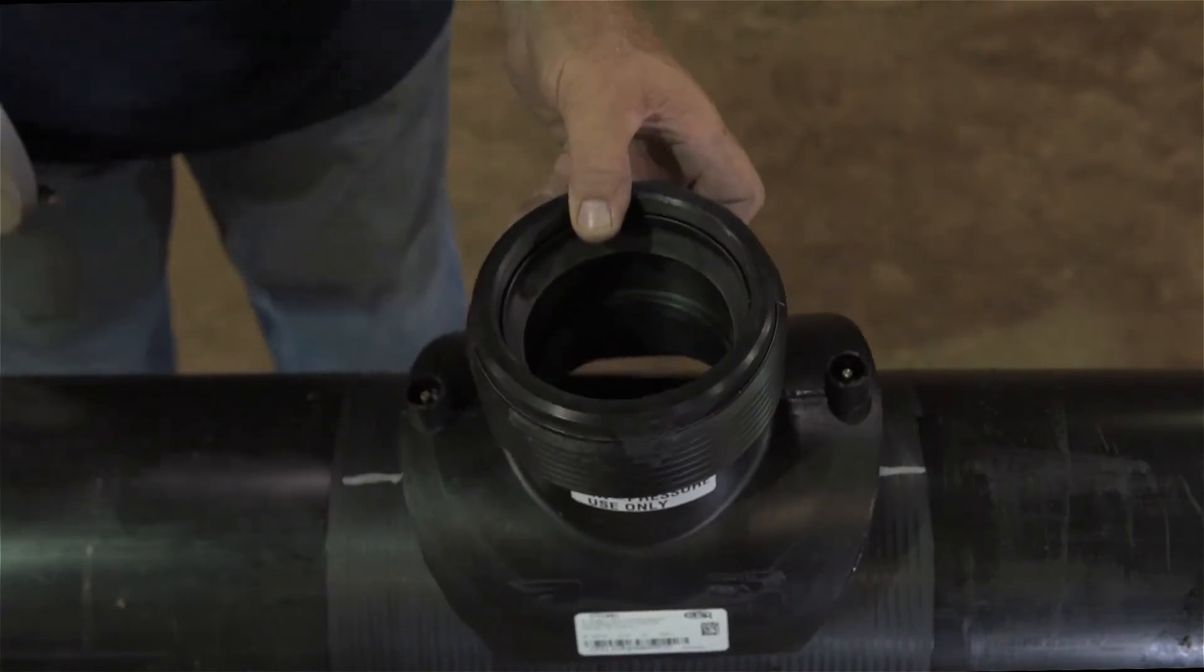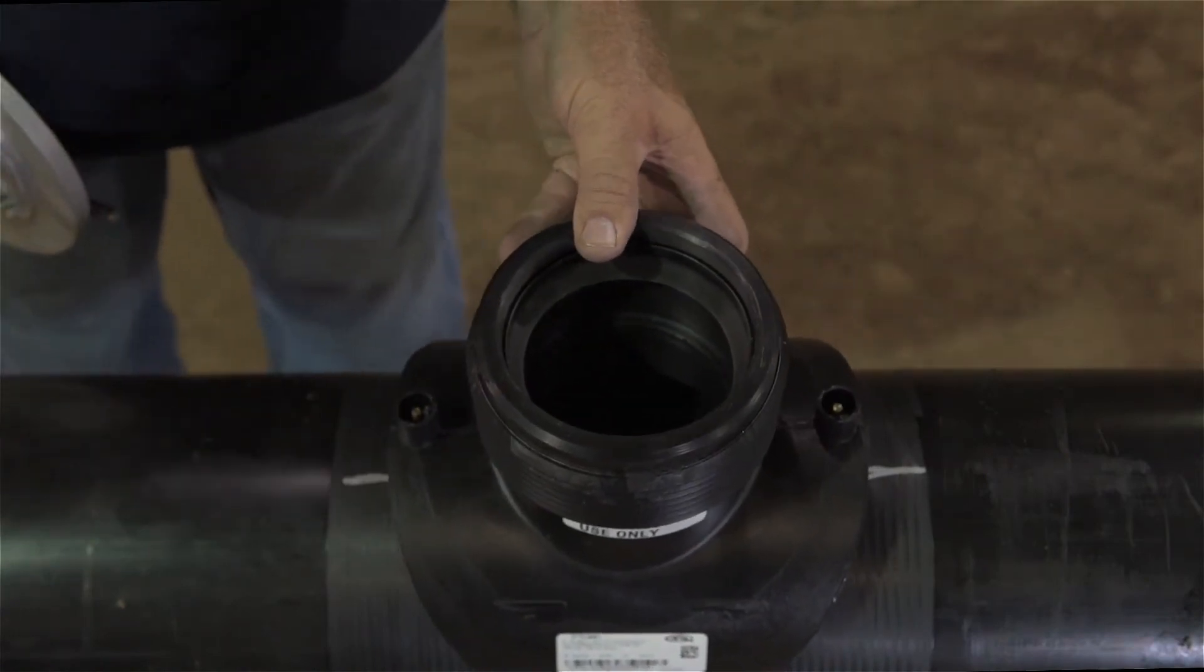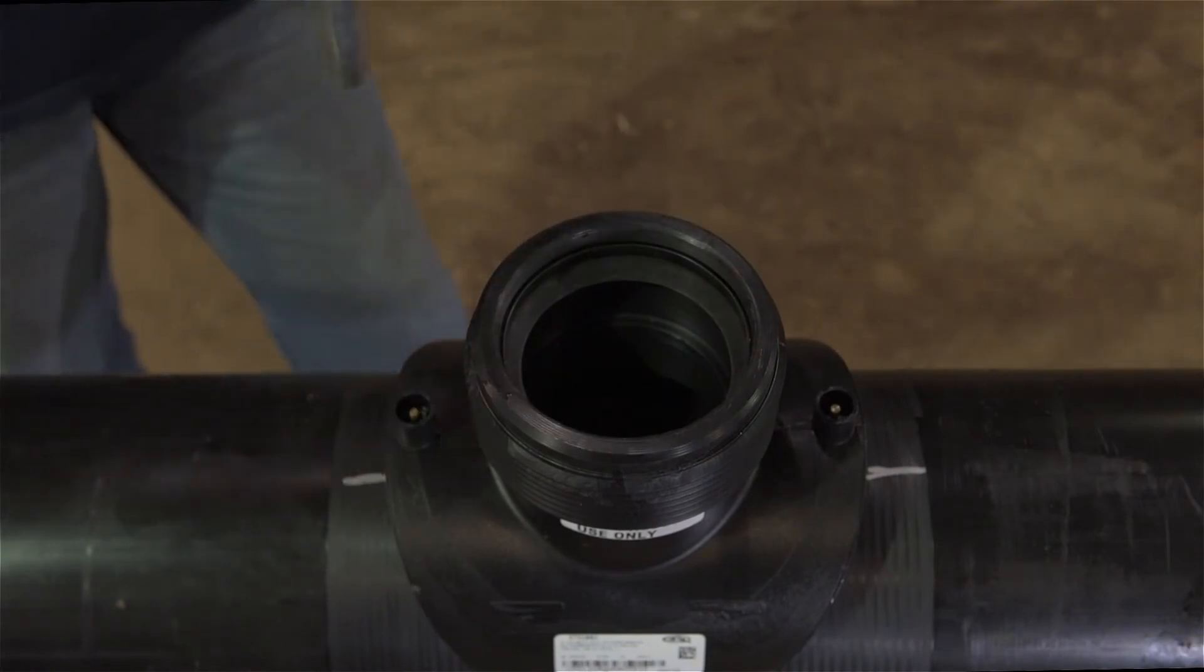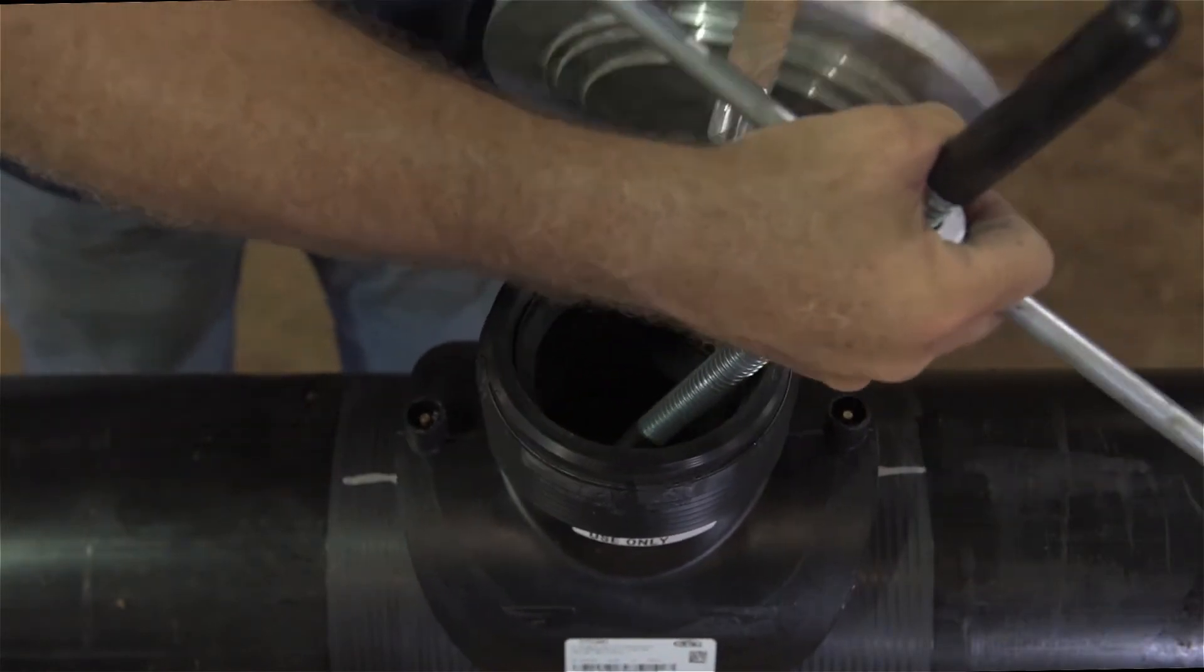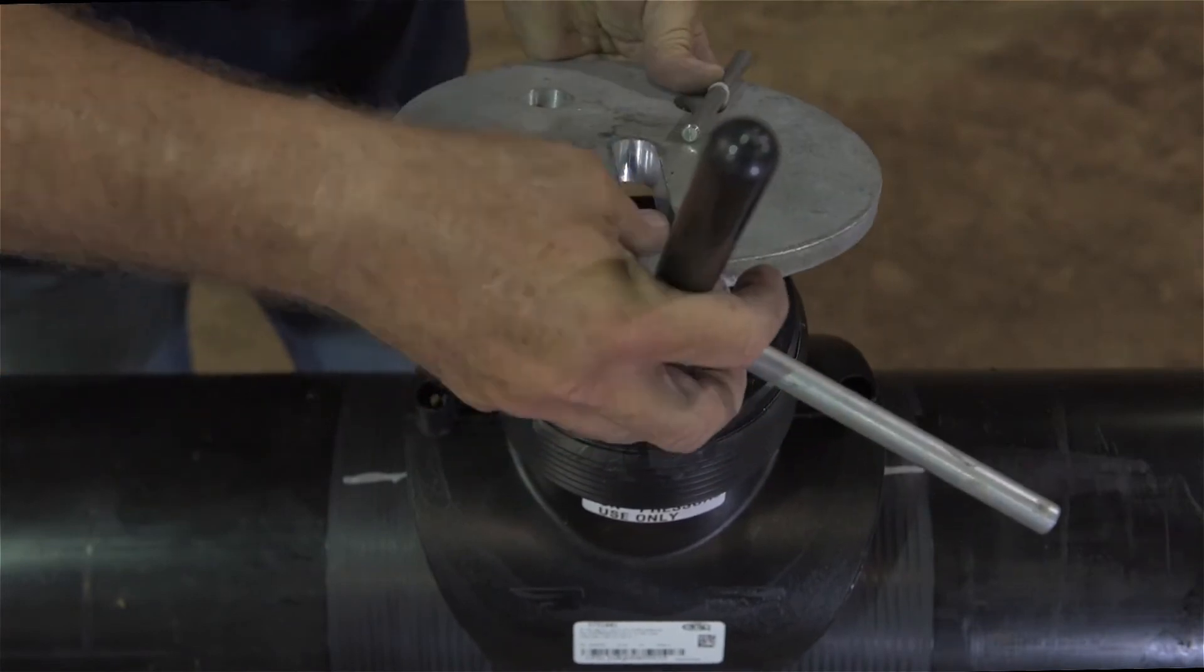Then mate the surfaces of the branch saddle to the main. Insert the swiveling base T-bar into the main, making sure the T contacts both sides of the pipe, running in line with the pipe. It may be necessary to use the cable component to fish the T into place.